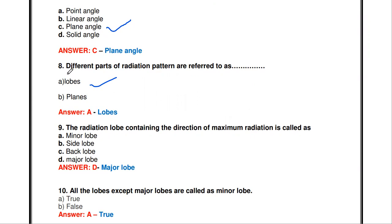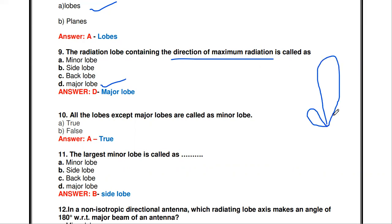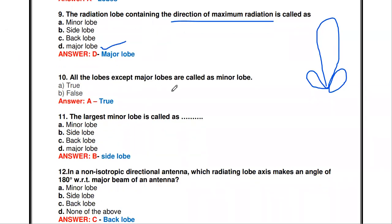The radiation loop containing the direction of maximum radiation is called — minor loop, side loop, back loop, or major loop? The answer is major loop. For example, in a radiation pattern, the loop indicating the direction of maximum radiation is called the major loop, or main beam. All the loops except the major loop are called minor loops — that is true.